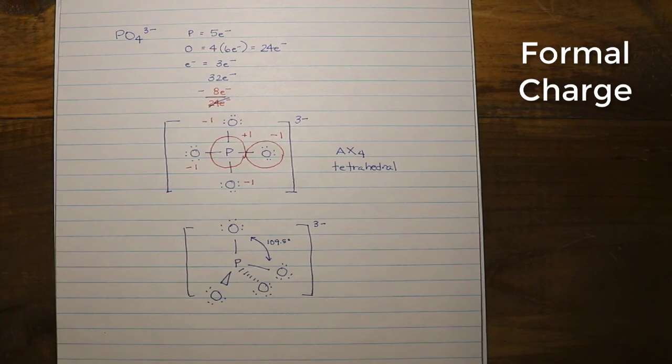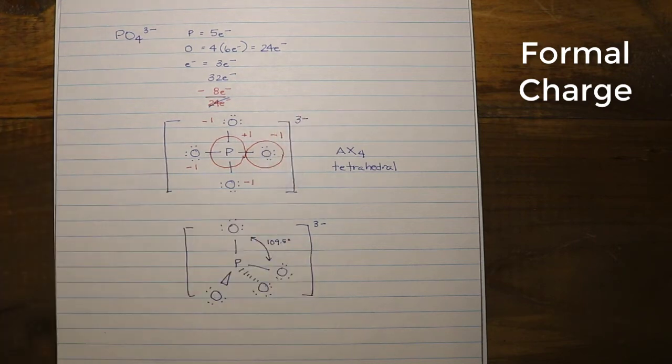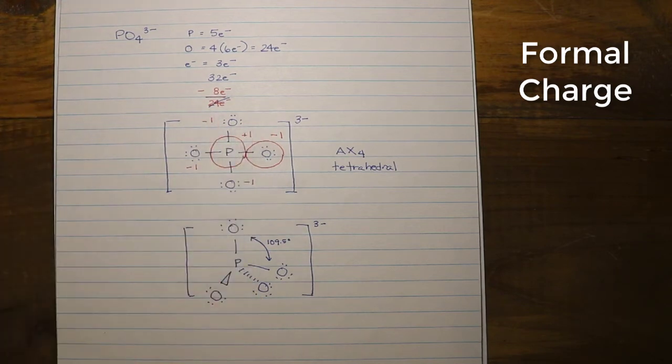And, if we did all of our formal charges correctly, all of those charges should add up to the overall charge in the polyatomic ion. If this was a neutral molecule, all of the formal charges would cancel out and leave us with 0. But, in this case, we have 4 negative 1s, and we have 1 positive 1. So, all of that does add up to 3 minus. So, the way that we use formal charge, is we try and get as many of those values as close to 0 as possible. Now, they can't all be 0, because this is a polyatomic ion.